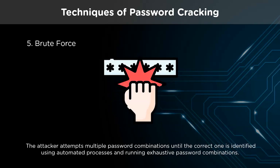In a brute force assault, the attacker attempts multiple password combinations until the correct one is identified. The attacker uses software to automate this process and run exhaustive password combinations in a substantially shorter length of time. With the growth of hardware and technology in recent years, such programs have been invigorated. It won't be quick if your password is more than a few characters long, but it will eventually reveal your password. Brute force assaults can be sped up by throwing more processing resources at them.